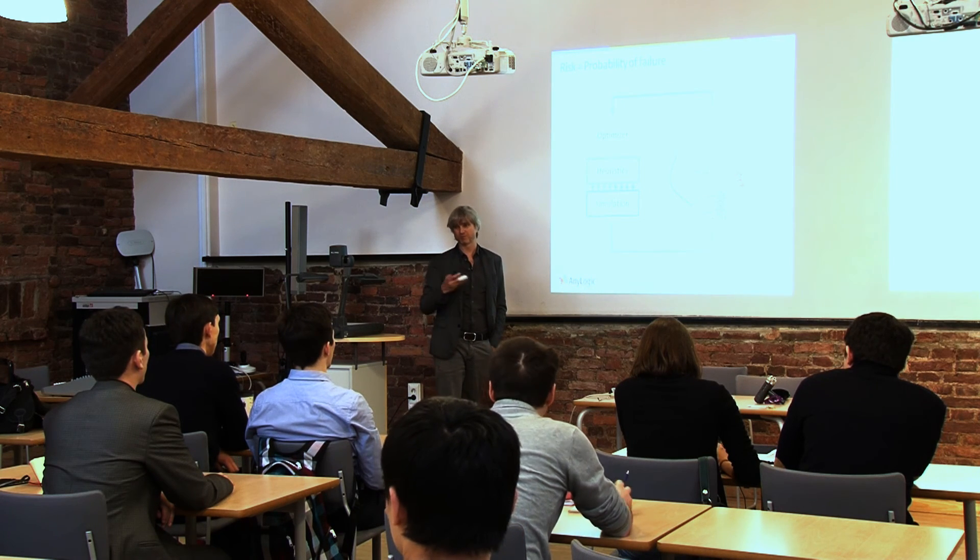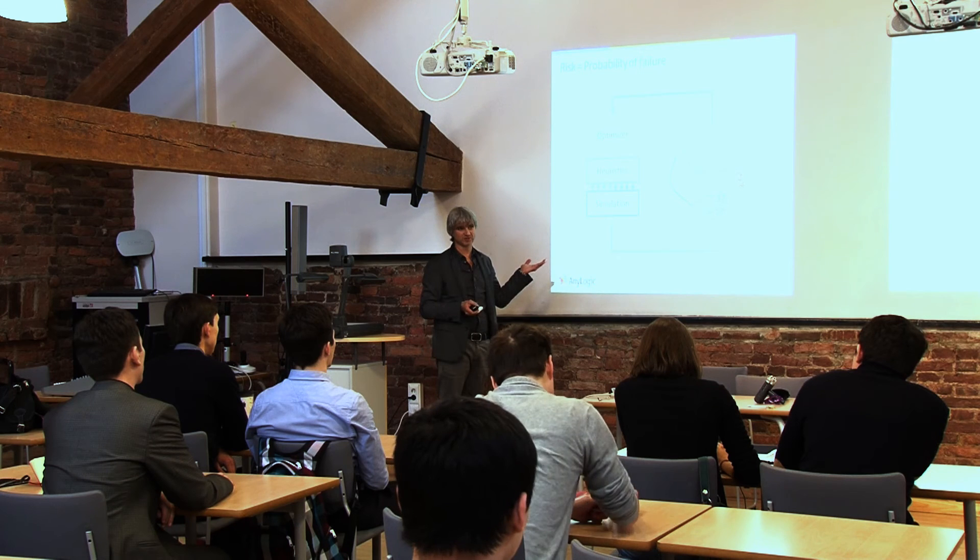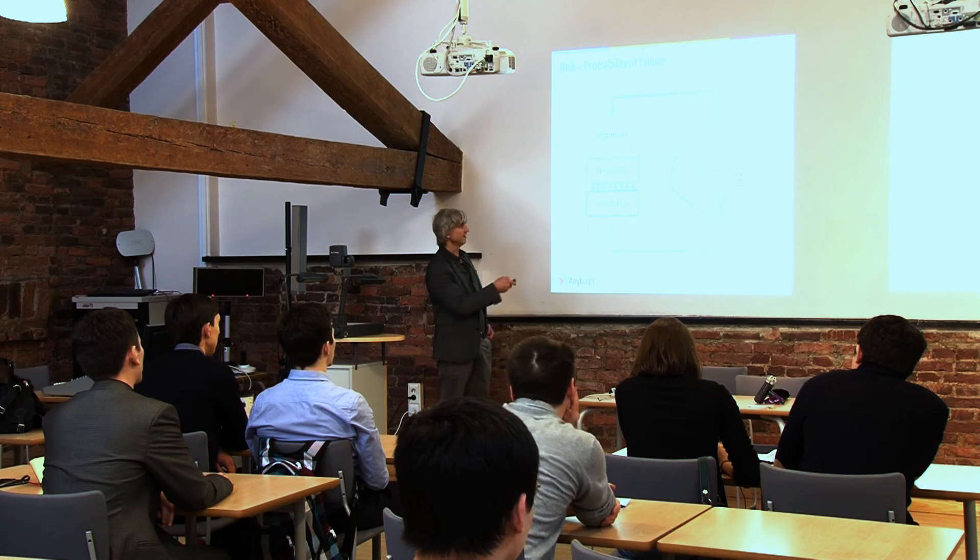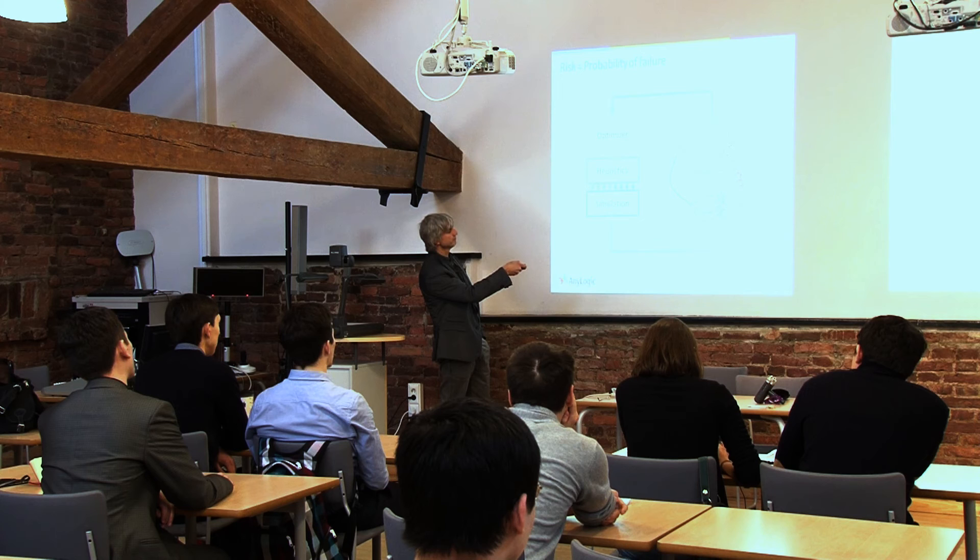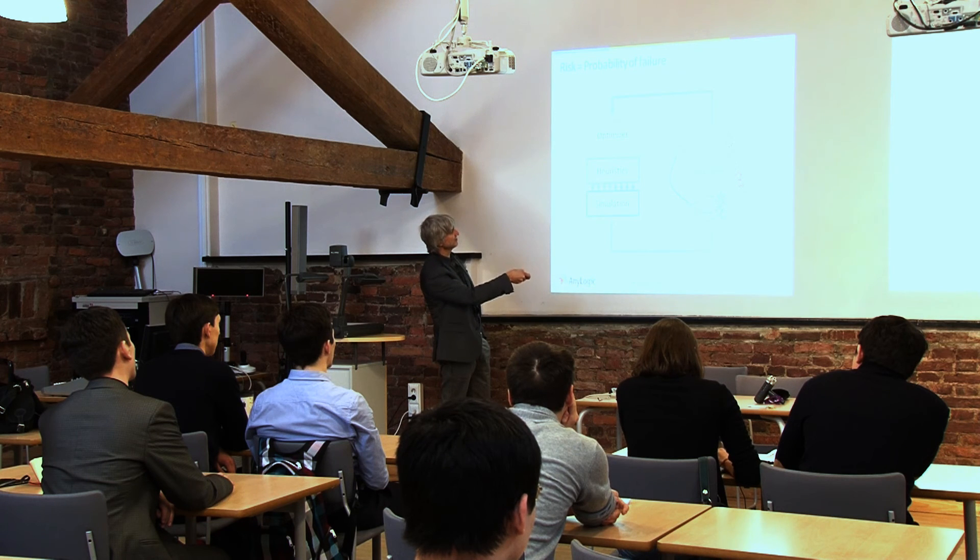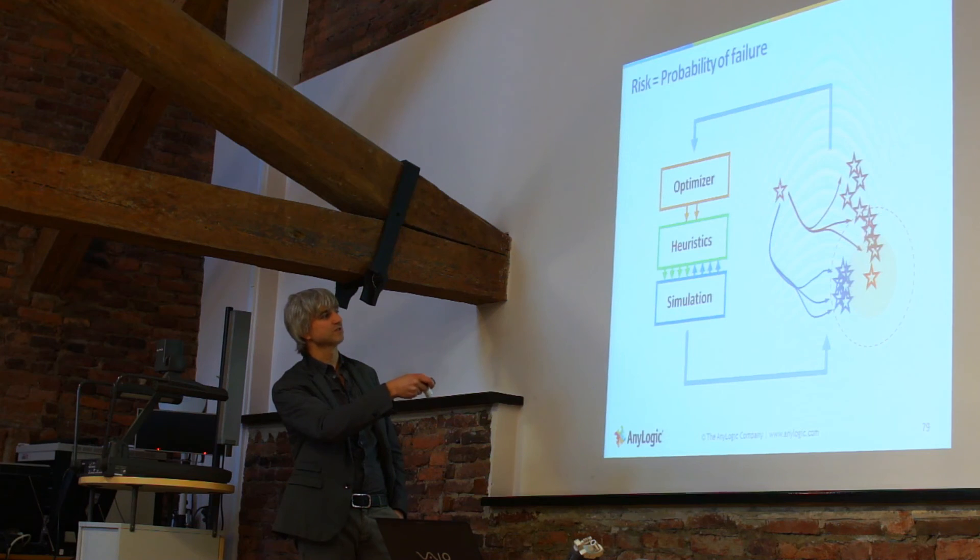And then your risk is the probability, the measure of risk in this case is the probability of failure. Let's say this is our ideal target, and this is acceptable range. And we're comparing two solutions: this solution and that solution. And in this case, this solution is not acceptable.